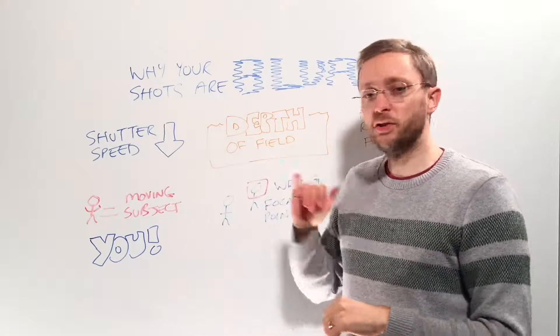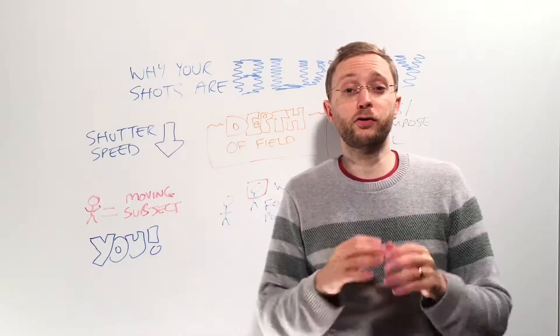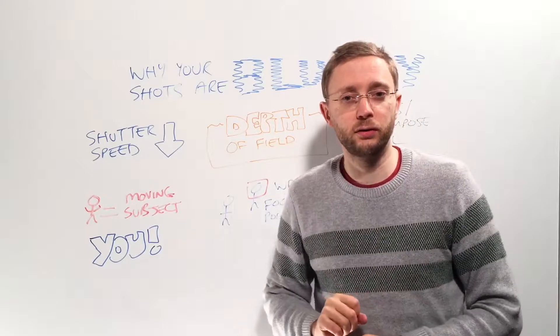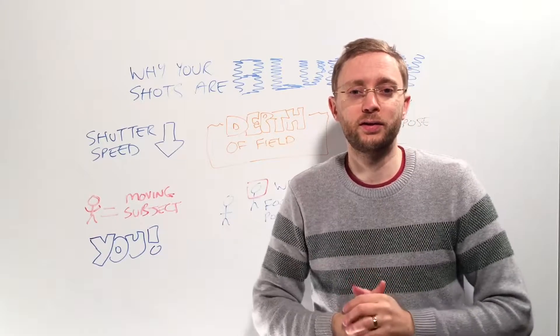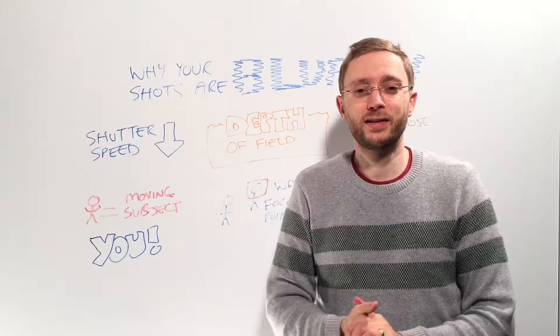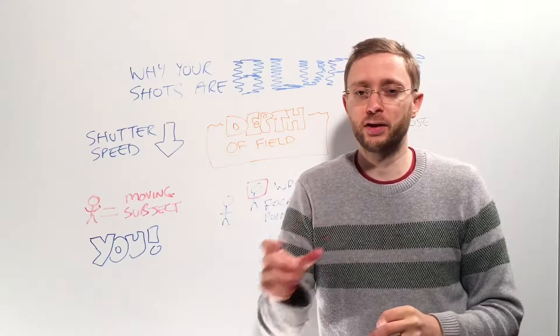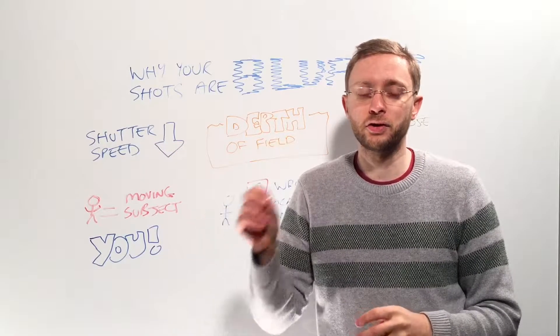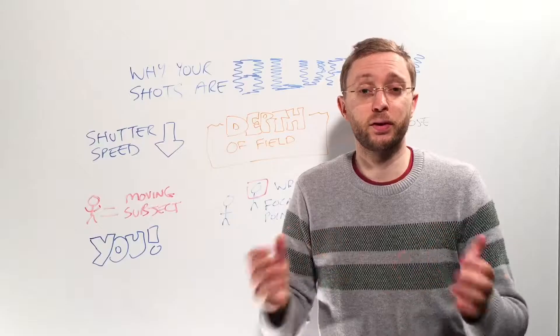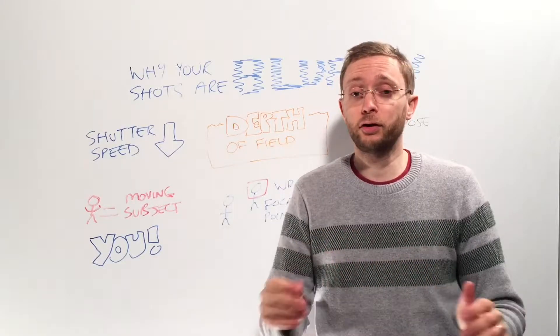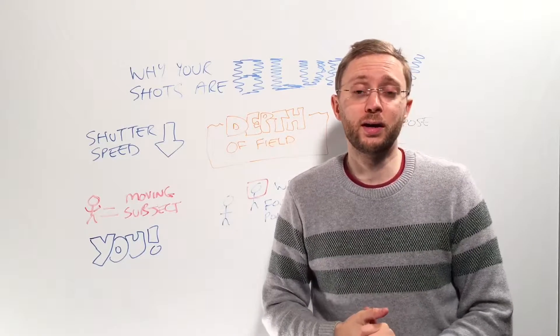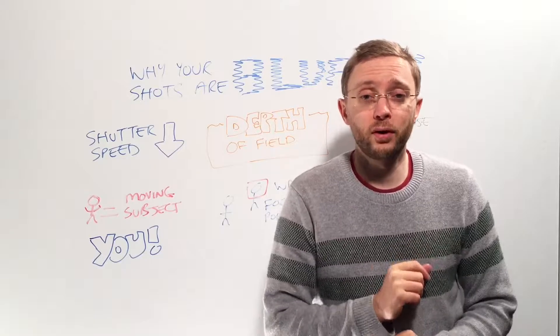Next up is your depth of field. Is your depth of field too shallow? We talked about depth of field a few tips for photographers ago. Is it too shallow? Are you making your aperture that low number so much so that actually there's not enough in focus from your focal point and that's why things are blurring out? Have a look at your depth of field and see whether your depth of field is appropriate for the subjects that you are taking photos of.